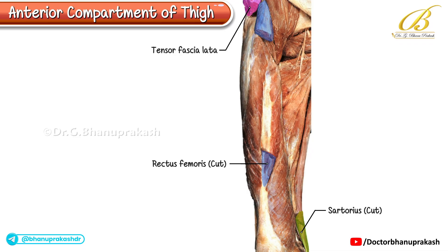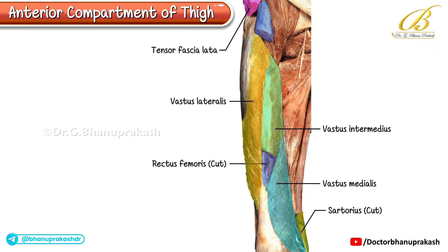Deep to the rectus femoris lies the vastus intermedius. The other quadriceps muscles — vastus medialis and vastus lateralis — remain intact and are well demonstrated here, as the tensor fasciae latae and sartorius have been removed. At the superior part of the specimen, the iliacus and psoas major are clearly visible. Both muscles converge together to form the iliopsoas tendon.